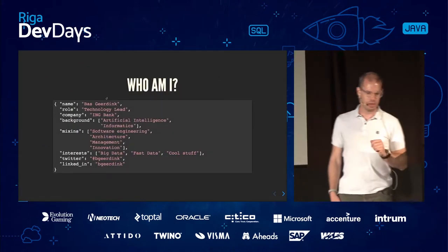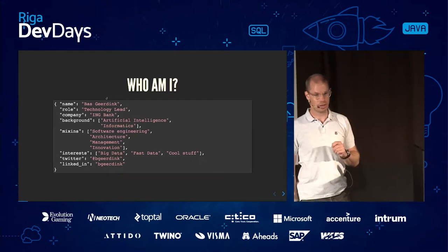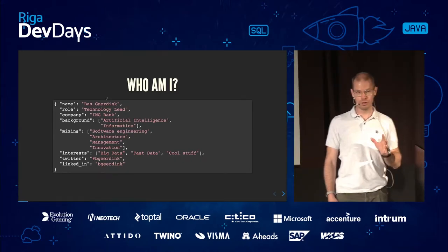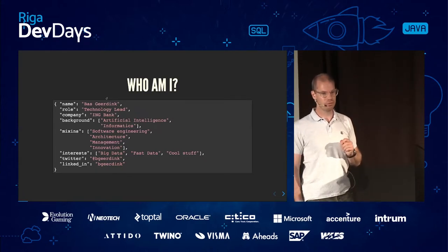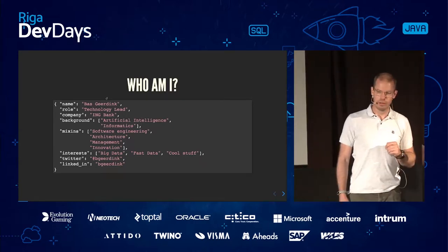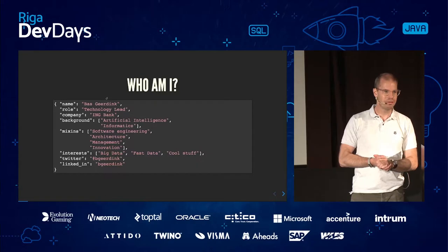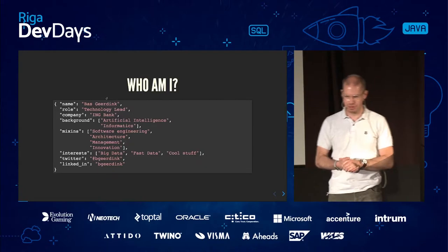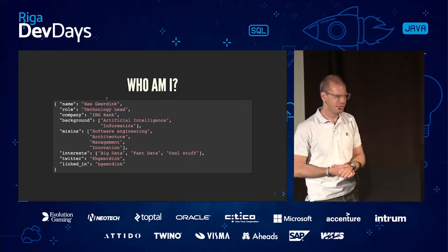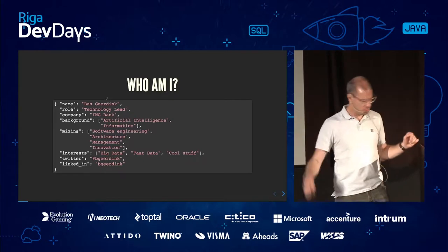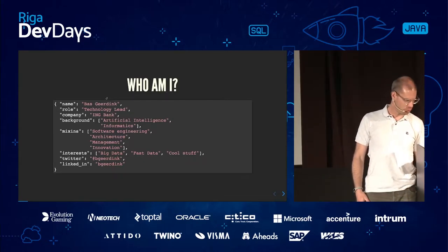A little bit about myself: my name is Bas Geerdink. I work at ING in Amsterdam at the bank. My role is technology lead — I lead a team of software and data engineers, and my own background is in AI. I really enjoy the current AI and big data hype because I see all kinds of things I learned during my graduation period. You can find me on Twitter and LinkedIn.